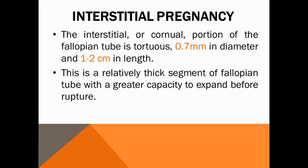The interstitial portion of the fallopian tube is tortuous, about one to two centimeters in length and about 0.7 millimeters in diameter. There is a relatively thick segment of the fallopian tube which can expand, allowing an interstitial pregnancy to be prolonged longer than an ordinary tubal pregnancy before rupture.